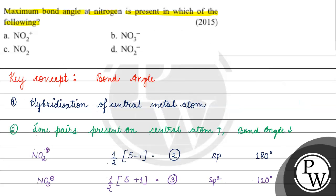Coming back to the question, the maximum bond angle is 180 degrees, which is present in NO2+. I hope you understood it well. Thank you and all the best.